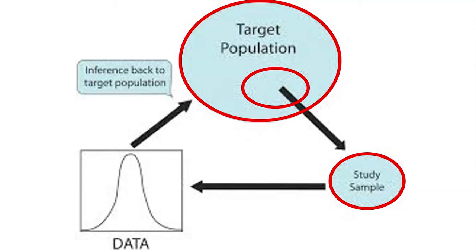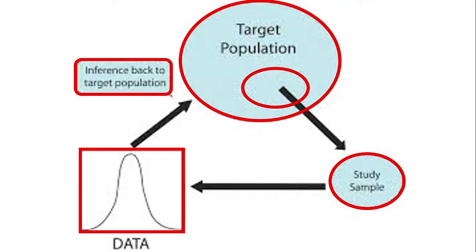Then we study that sample. We look at it in detail, we draw the graphs of the data, we understand it. We come up with an analysis and conclusion. And lastly, from that sample data, we're going to make an inference back to that target population. We're going to use that sample data to predict or estimate what we think is true in the target population.